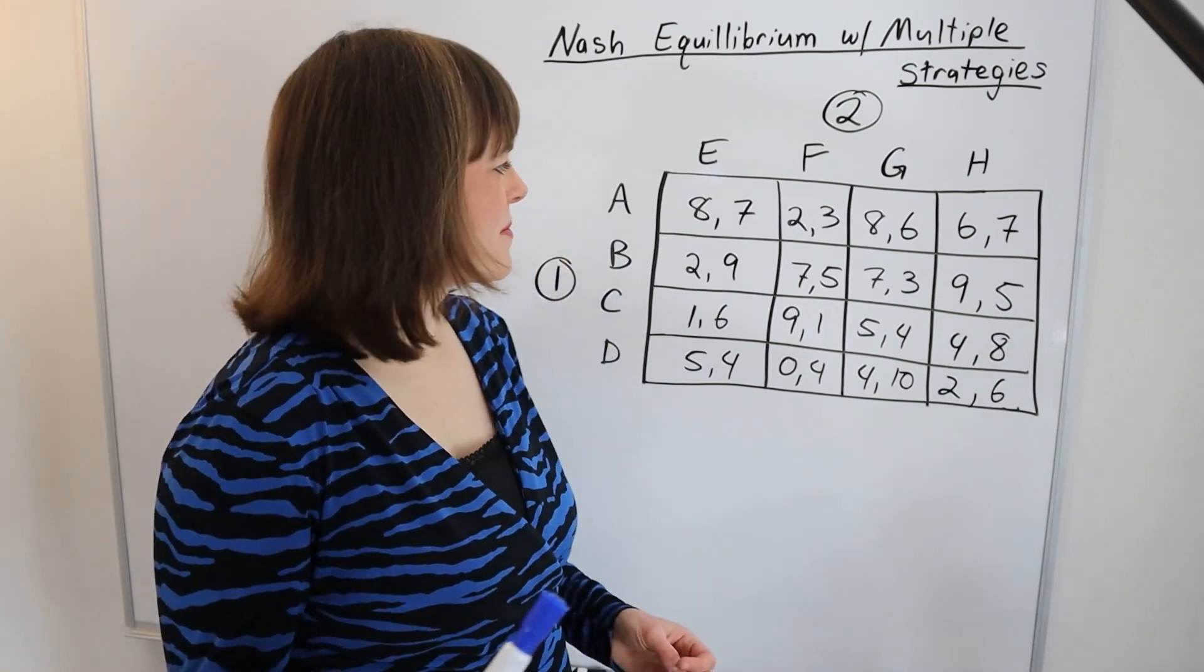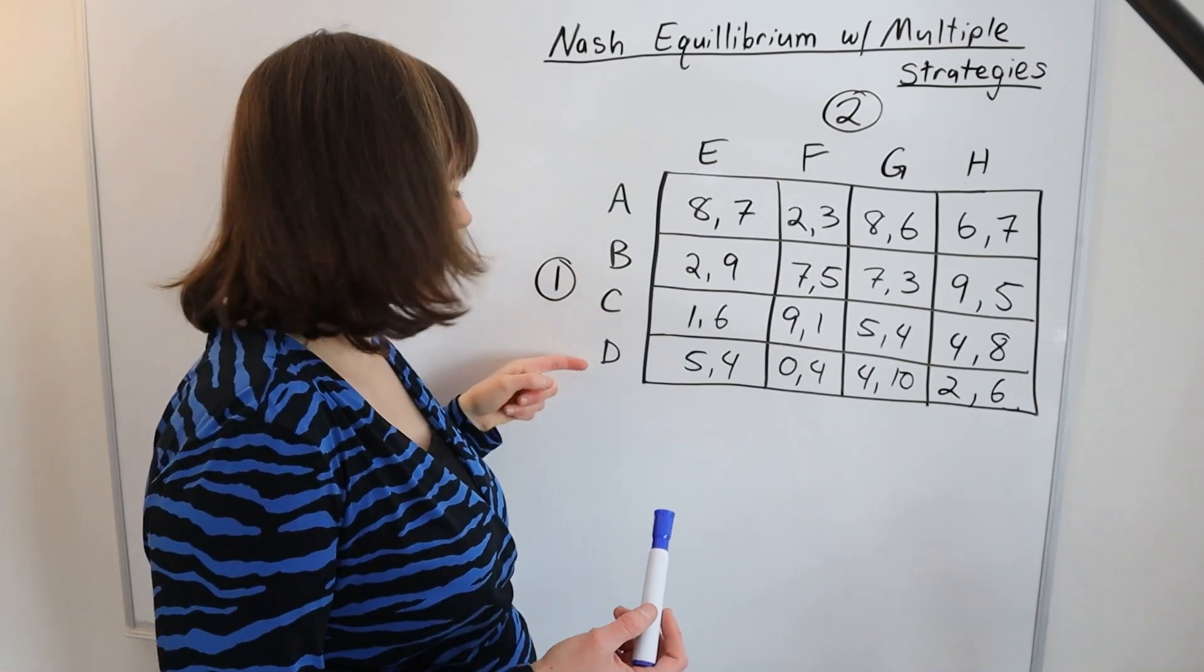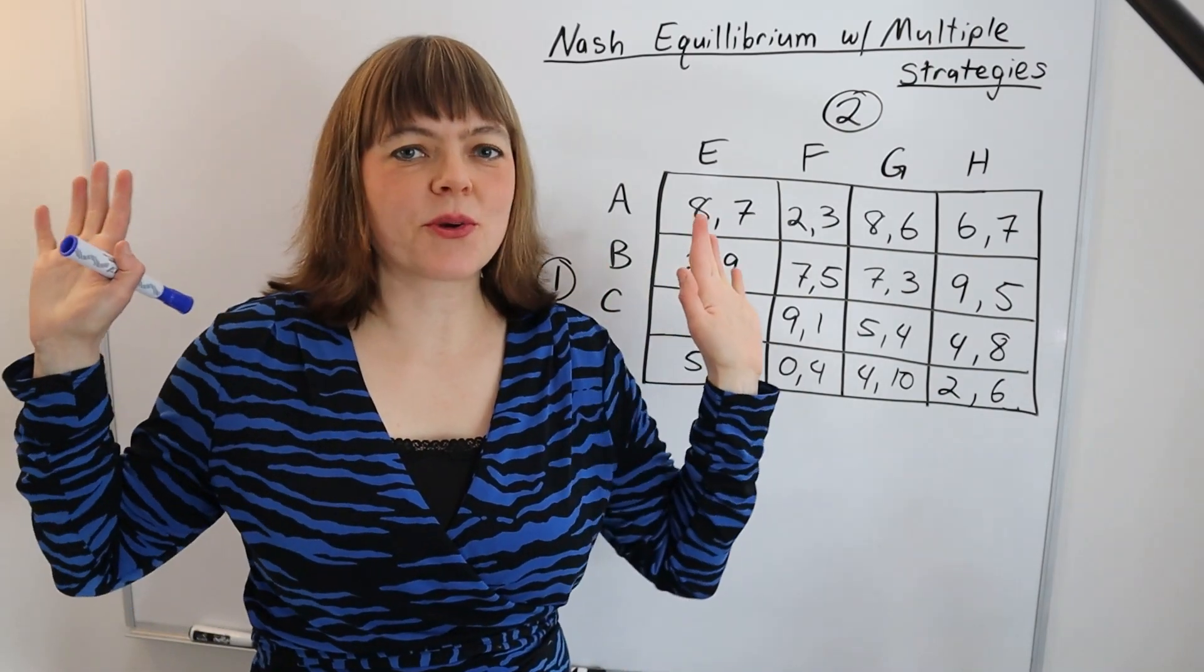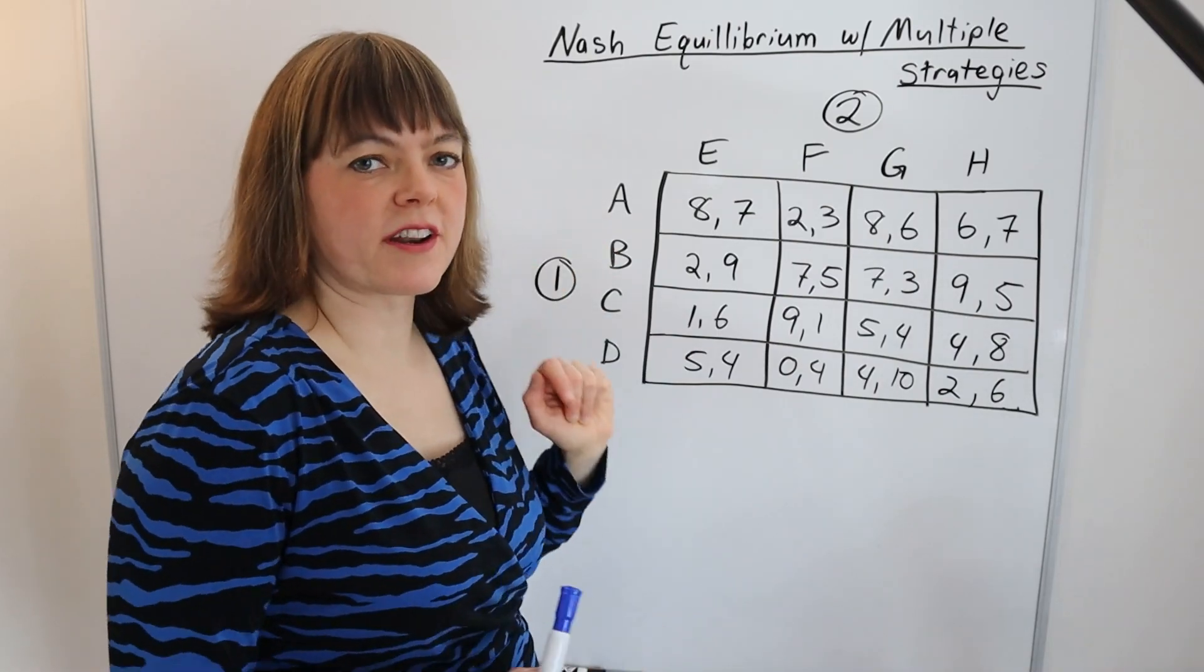How do you solve for Nash Equilibrium when each player has multiple strategies that they could take? This is actually going to be identical to the way you approach it when each player only has two strategies.